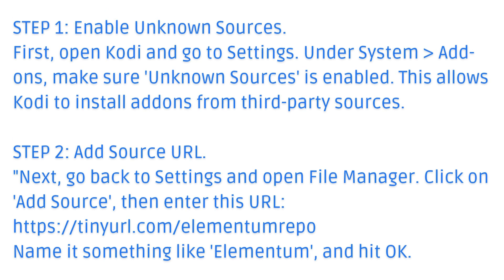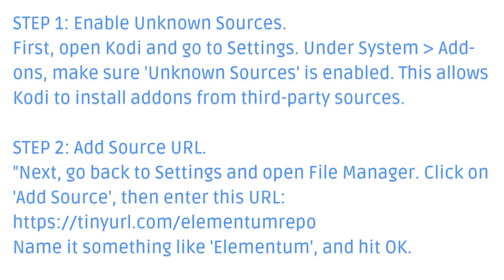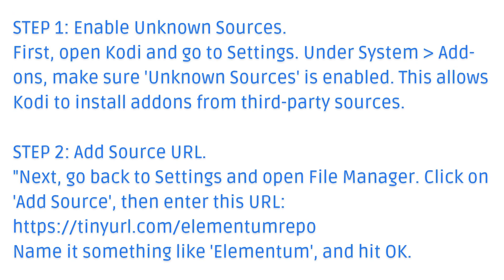Step 1: Enable unknown sources. First, open Kodi and go to Settings. Under System Add-ons, make sure Unknown Sources is enabled. This allows Kodi to install add-ons from third-party sources.